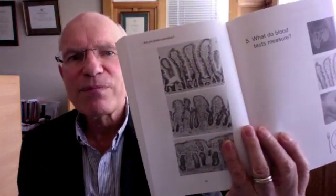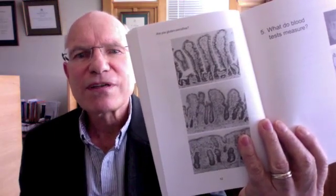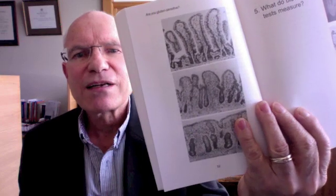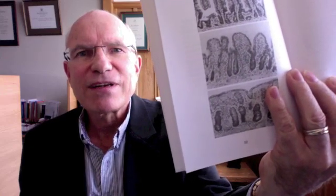This is the endoscopy and this is the sort of thing that was looked for. You can see the top section shows normal villus, the middle one shows villus atrophy, and the bottom one shows a flat villus — that's extreme villus atrophy of celiac disease.